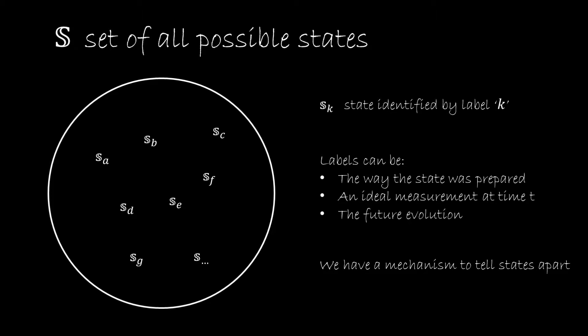So let's suppose we have a system, and this system can be prepared in different configurations. We call each of these configurations state. And so we define a set called S, which is the set of all the possible states that our system can be in. And we're going to have little s - SA, SP, and SC - be all the different states that the system can be prepared in. Each state has a label, which is A, B, C, and D.